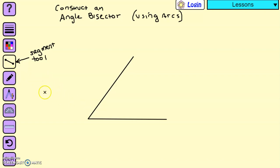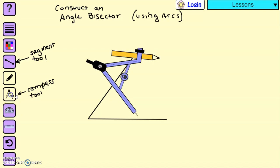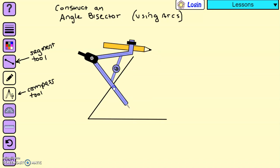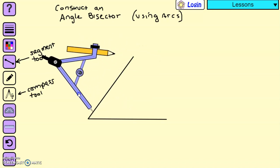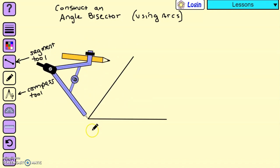And then what I'm going to do is I'm going to now use the compass tool to create arcs. So the first arc that I'm going to create, I'm going to place the compass tool, the sharp part of the compass tool, I'm going to place it on the vertex of the angle.